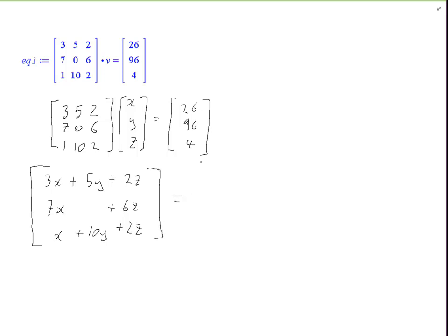And that should be equal to 26, 96, and 4. Because here you've got a vector. Here you also have a vector, and if they're equal, it means that this number must be this, this number must be this, and this number must be this.